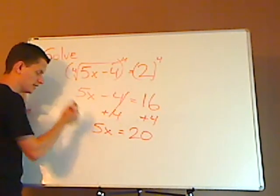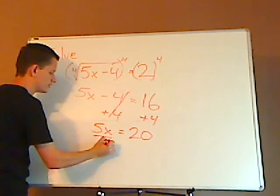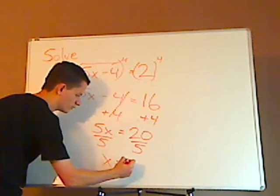So you have 20, and then you have 5x over here. You're solving for x, so you divide both sides by 5. So x equals 4.